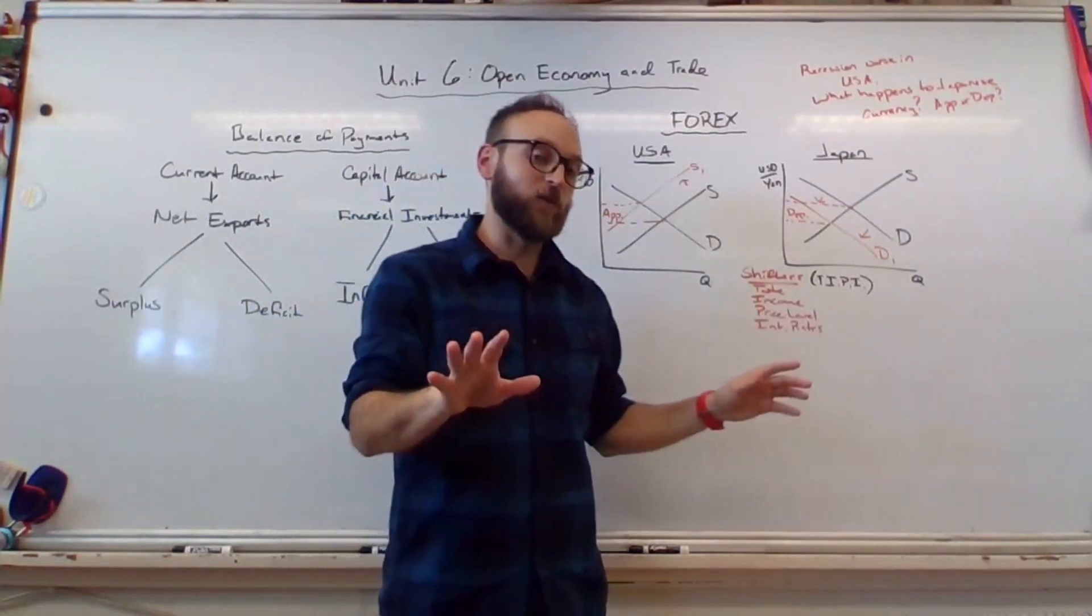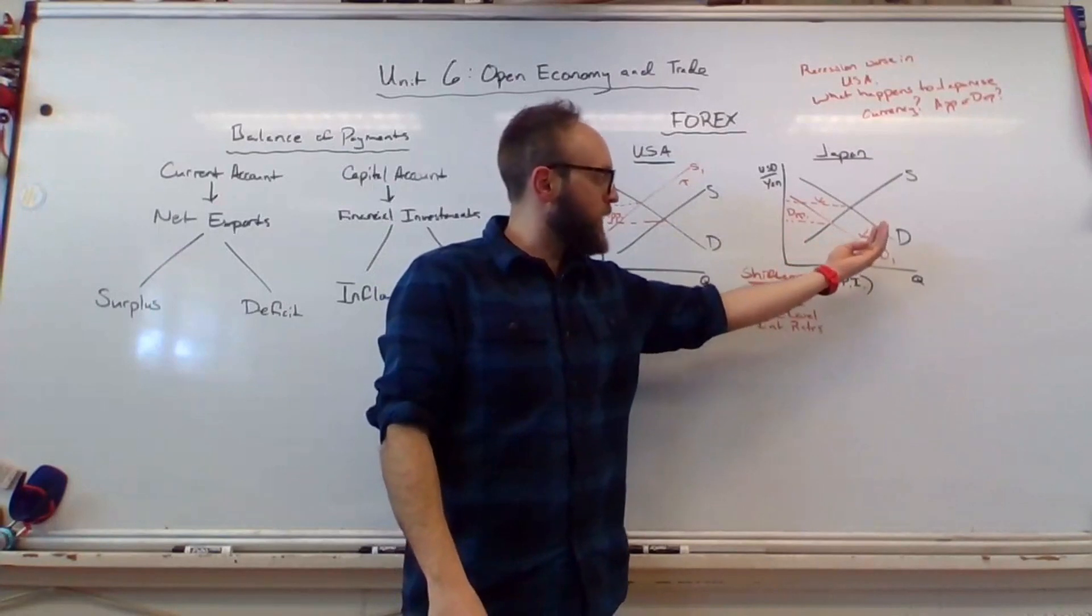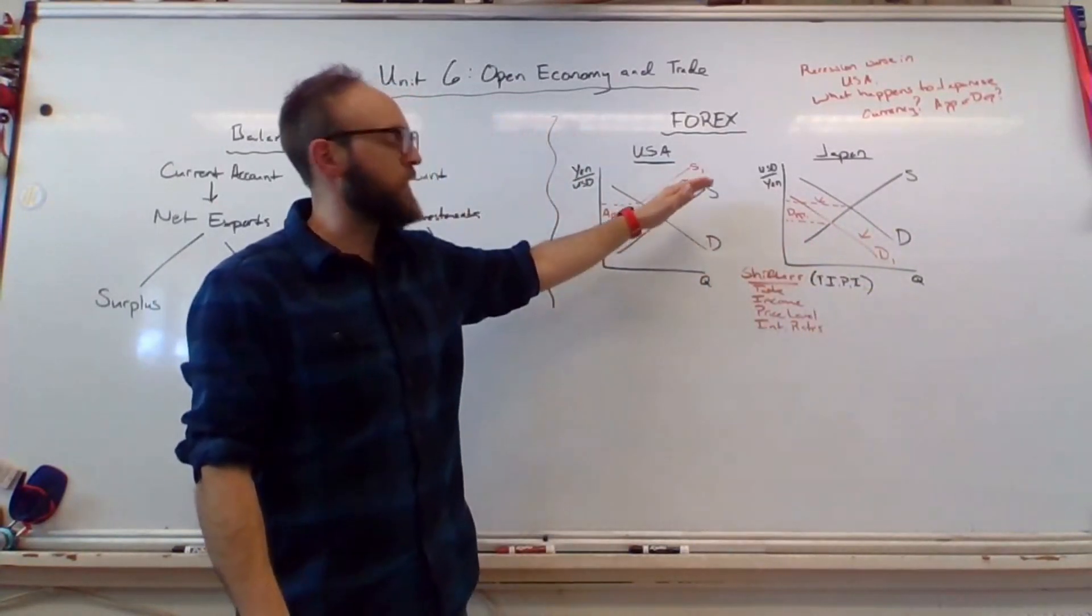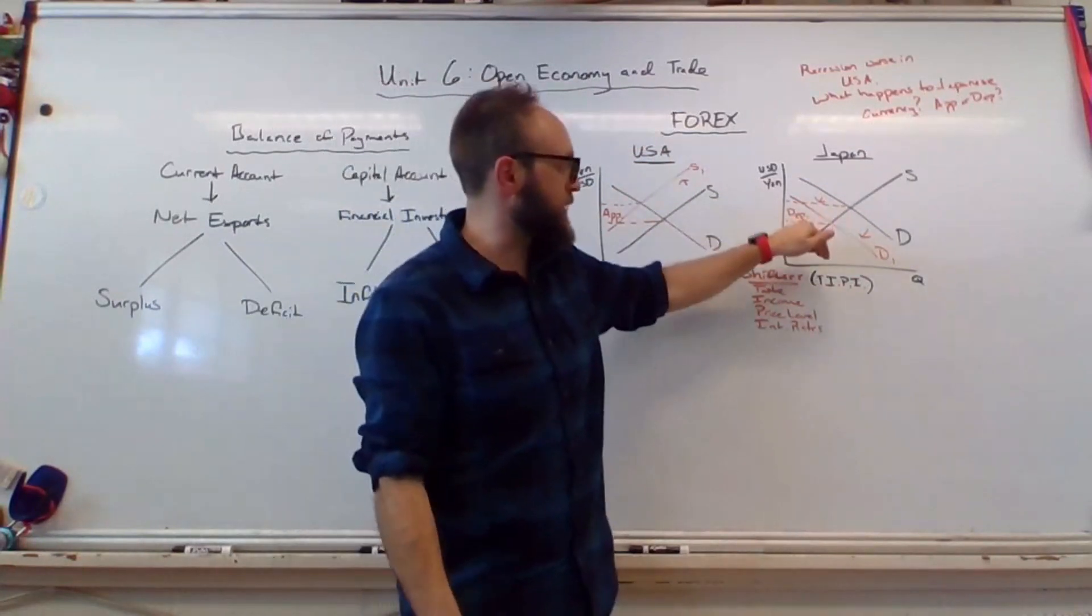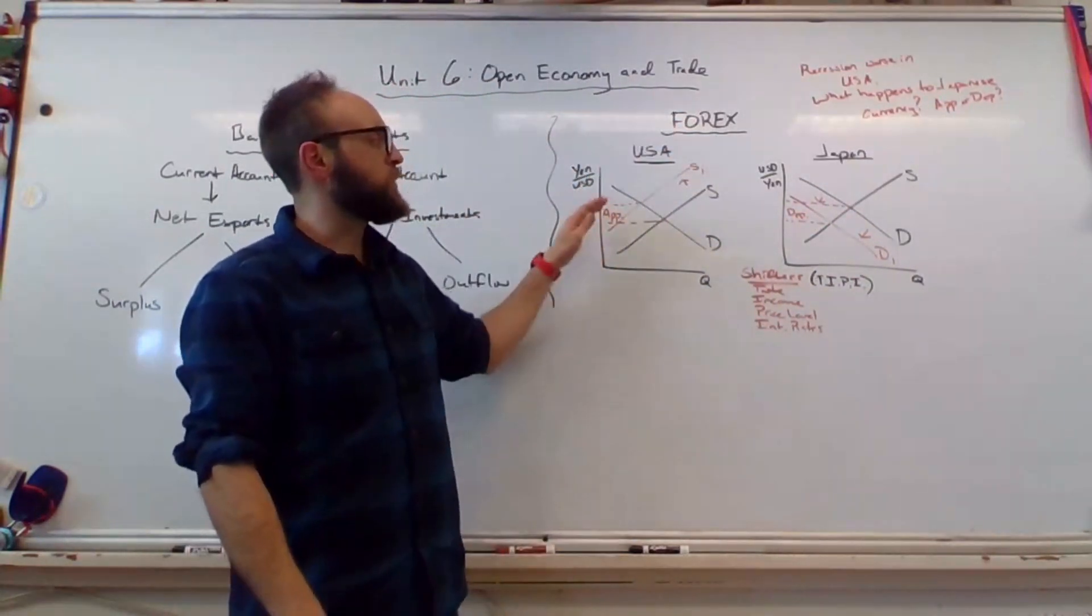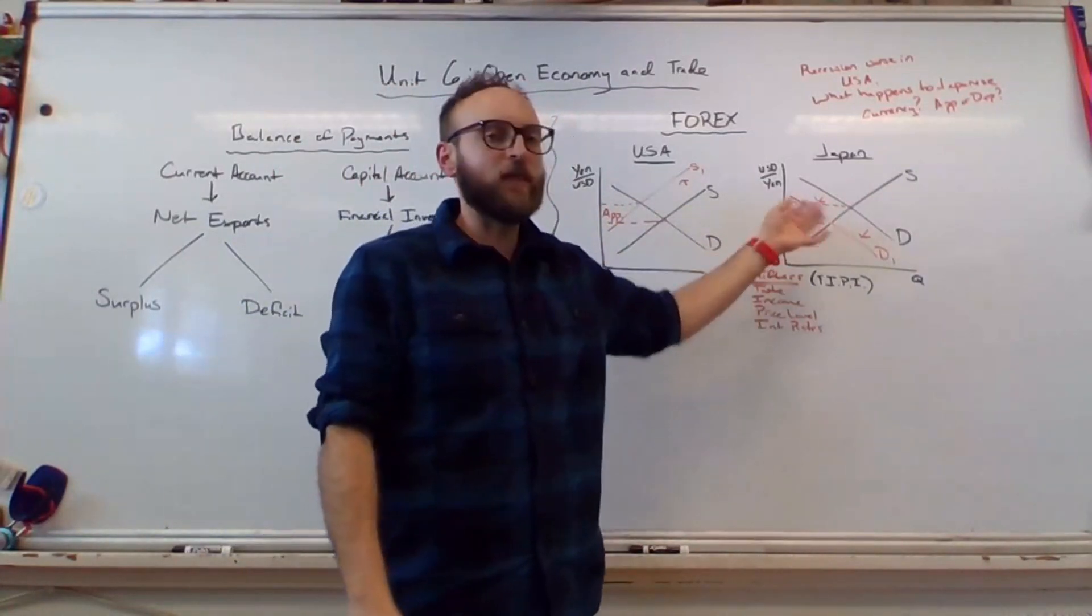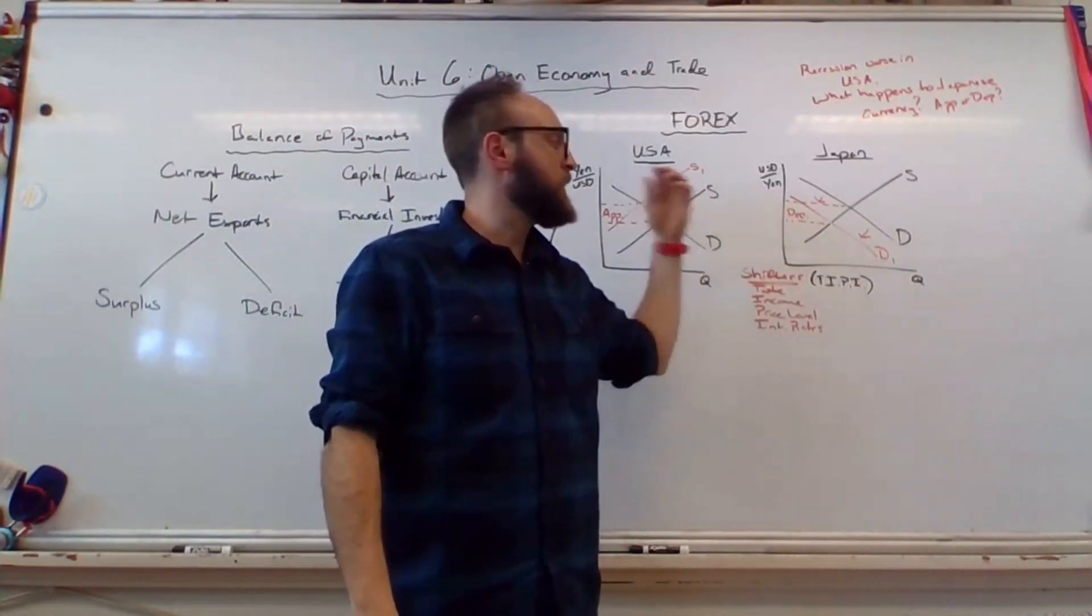And remember, the only rule here is if you're shifting one line a direction on a graph, you go to the other country, you shift the other line the same direction. So because demand is going left, supply goes left, and that's because we're no longer supplying the US dollars necessary to buy the Japanese yen. So less supply, less demand.